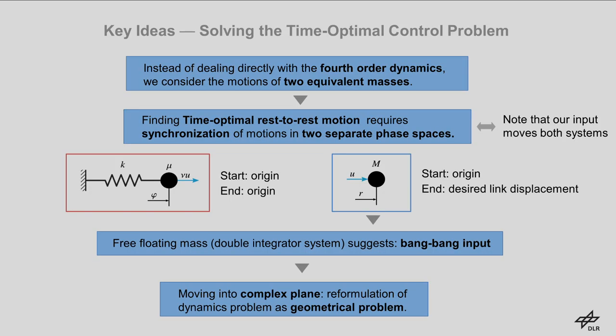So, what are the key ideas underlying our solution to the time-optimal control problem? Instead of dealing directly with the fourth order dynamics of an elastic joint, we consider the separate motions of two equivalent masses, the free-floating total mass and the oscillating reduced mass. This means constructing a time-optimal rest-to-rest motion requires us to synchronize the motion of two masses in two separate phase spaces that are subject to the same input, just with different scaling.